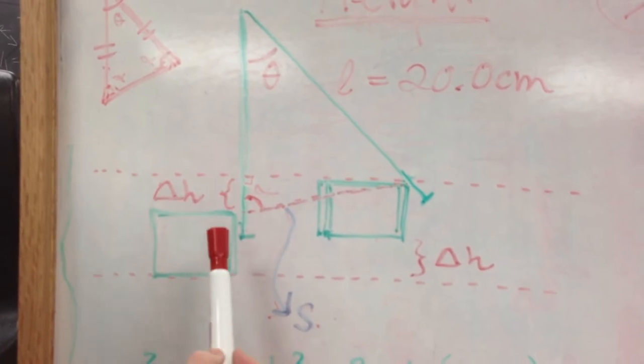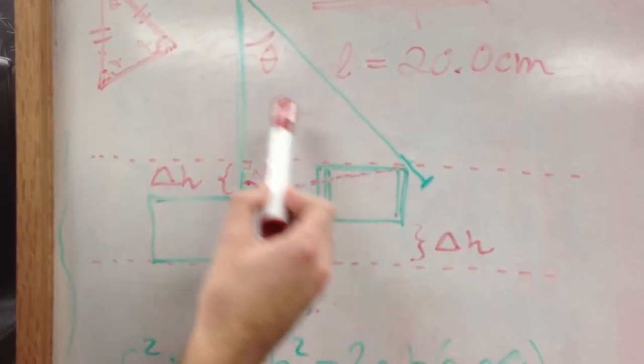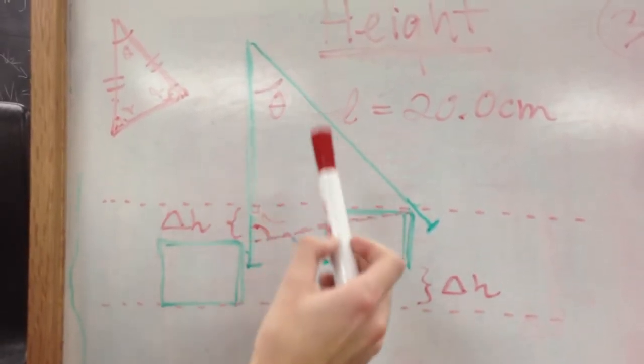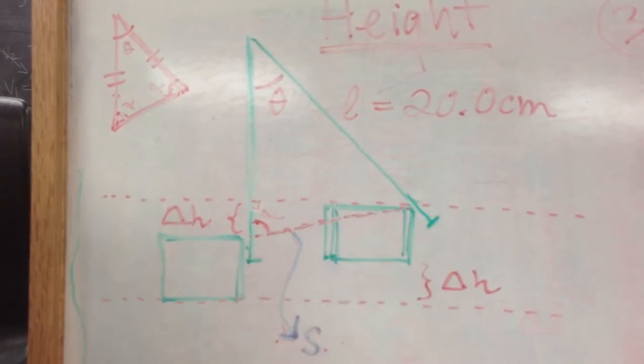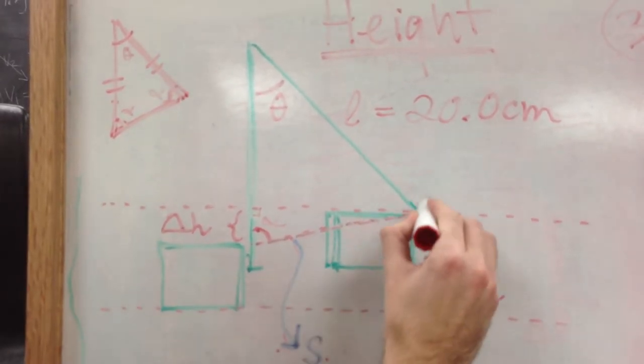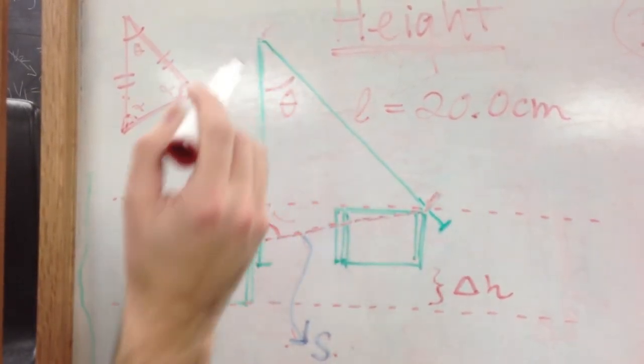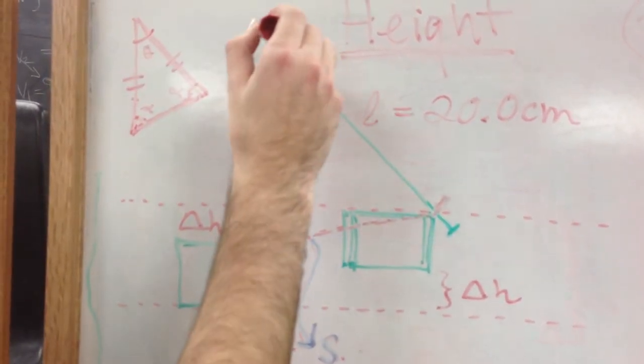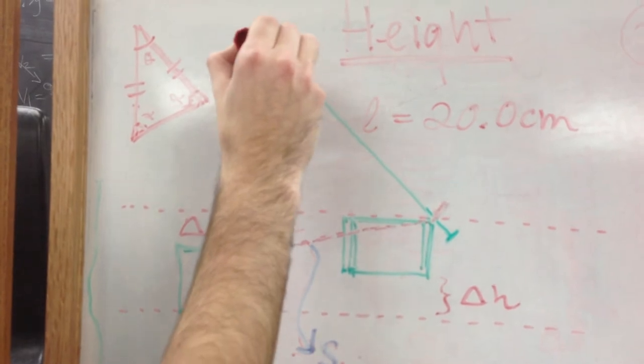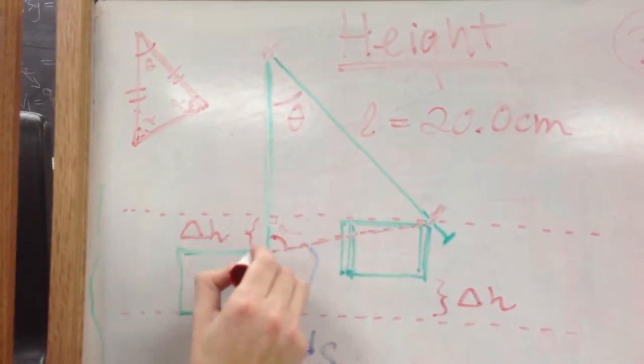So the way we're going to go about this is we need to figure out what is the length from the corner of the box here to the hinge. I previously measured that the height from the hinge down to the top of the box was 20 centimeters exactly.